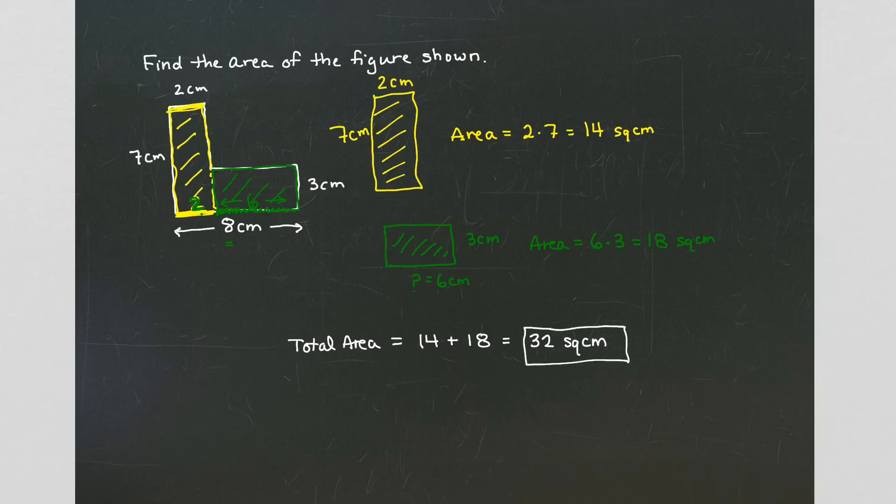Now like I mentioned, there's a couple other ways to do it. You can break it up using smaller rectangles, different rectangles. You can even make a big square and take away a piece. But this is just one way to look at analyzing how to calculate the area for a weird L shape. If you have any questions, let me know.